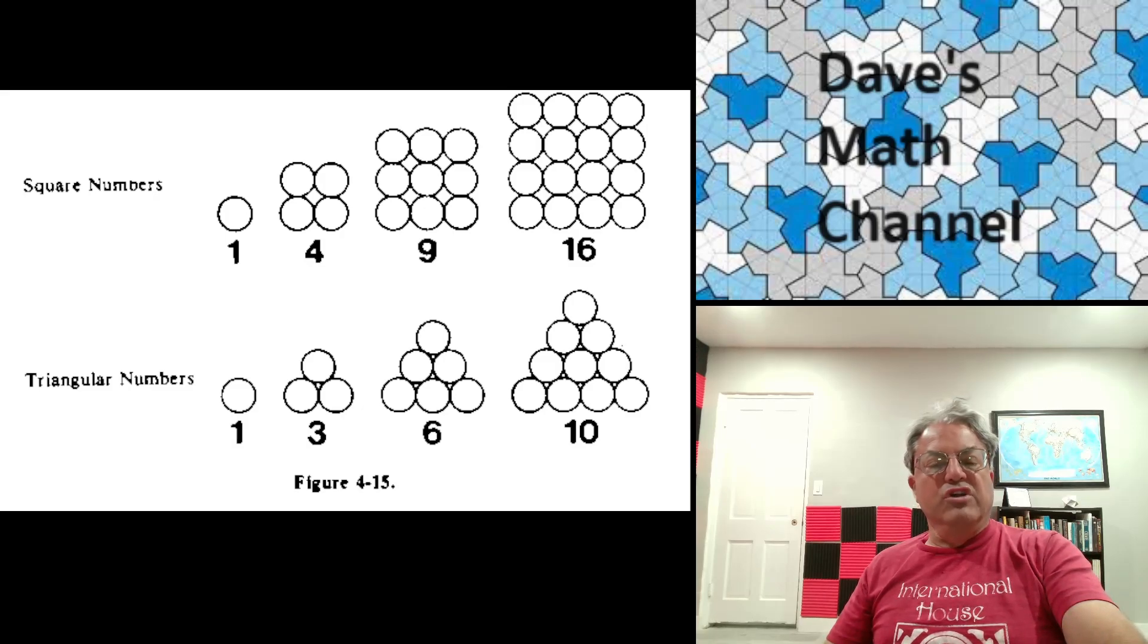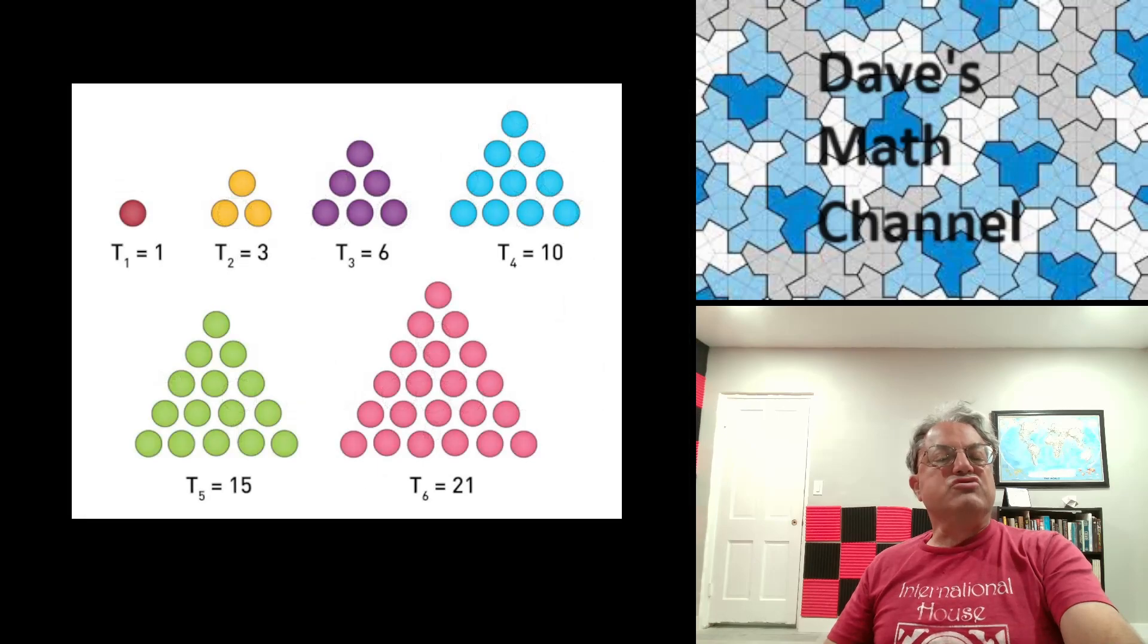But can we get a formula? I mean, we have an obvious formula for the nth square - it's just n times n or n squared. But what about triangular numbers?